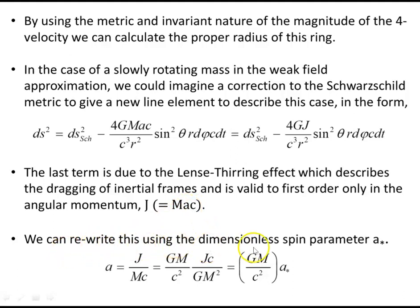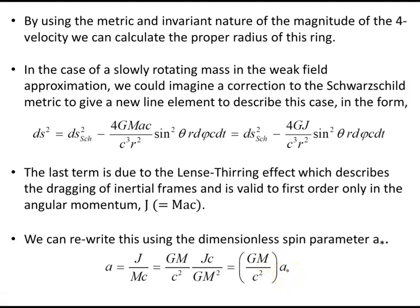Now we can rewrite this using the dimensionless spin parameter a*. The angular momentum per unit mass from the expression above is the angular momentum divided by the mass times c. Dimensionally, that's the same as GM/c² times Jc/GM², and we can factor out GM/c², leaving a dimensionless quantity which we call a*. In the literature, black holes are often parameterized according to their mass and this dimensionless spin parameter. So when we seek an expression for the proper radius of the ring singularity, we'll do that in terms of mass M and a*.